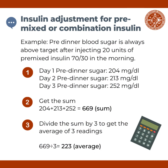Here is an example of a patient using pre-mixed or combination insulin. His pre-dinner blood sugar is always above target after injecting 20 units of pre-mixed insulin 70/30 in the morning. His pre-dinner sugars for three consecutive days were: day 1 — 204 milligrams per deciliter, day 2 — 213 milligrams per deciliter, and day 3 — 252 milligrams per deciliter.